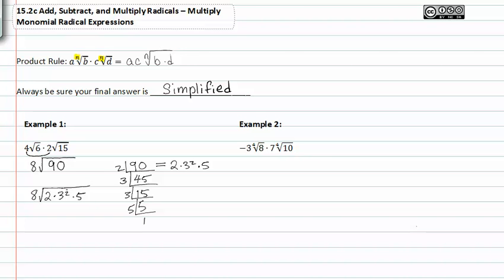Three squared has an exponent of two and the index of two, so we can pull three out and we'll be left with two times five which is ten. So my final answer is eight times three which is twenty-four root ten.